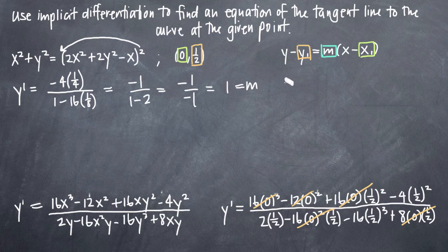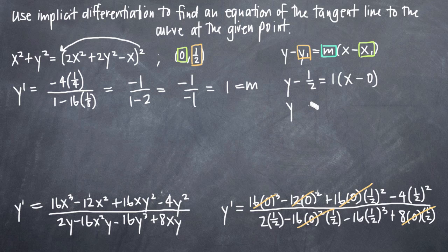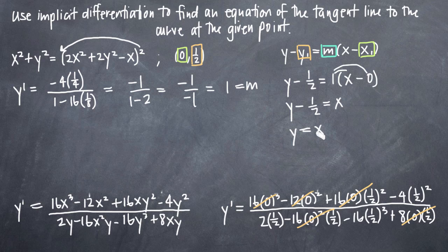Now I can return to my tangent line equation and plug in the three values. y minus y₁, which is 1/2, equals m, which is 1, times x minus x₁, which is 0. Simplifying: y minus 1/2 equals x. Adding 1/2 to both sides gives us the equation in slope-intercept form: y equals x plus 1/2. This is the equation of the tangent line to the curve at the point (0, 1/2).